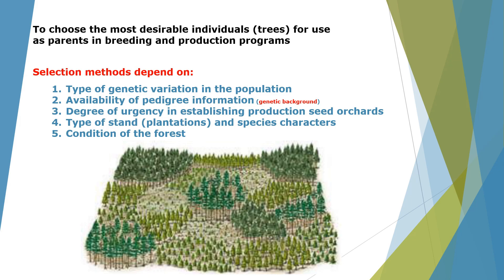Tree improvement requires a lot of breeding in order to modify species, varieties, or individuals for specific traits. For example, you want to have taller trees in order to harvest more wood, or you want to have tastier fruit — you want to modify those trees or forests for tastier fruit.